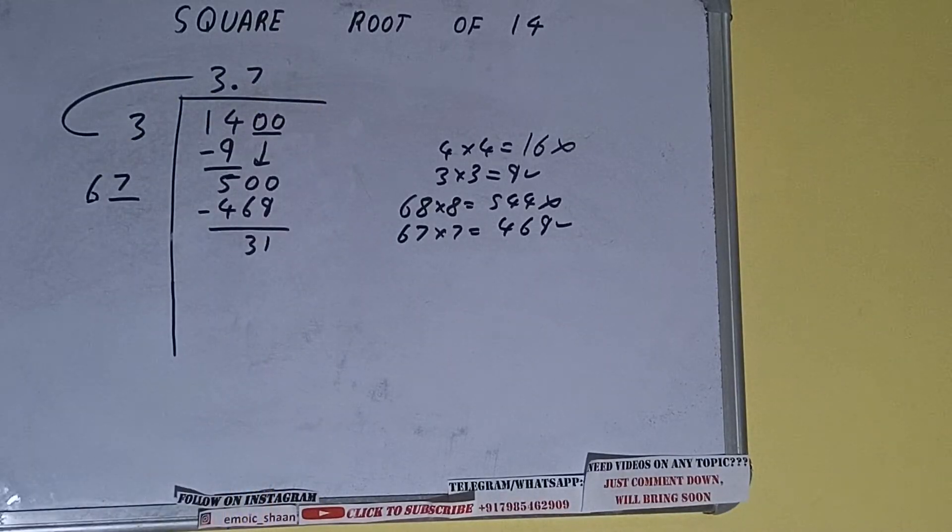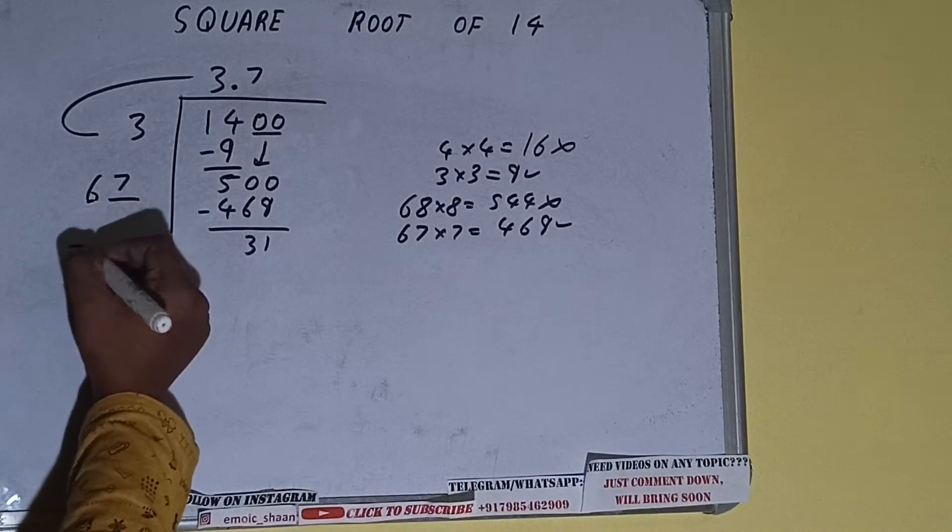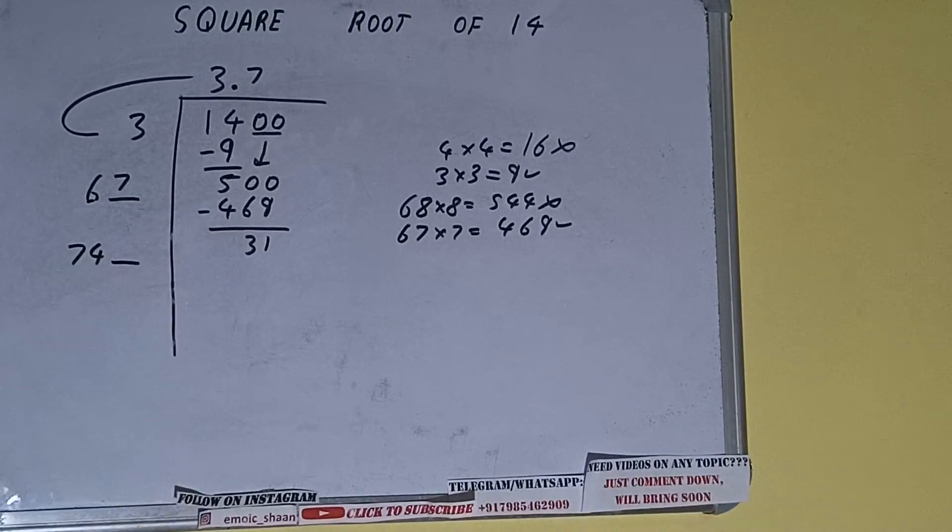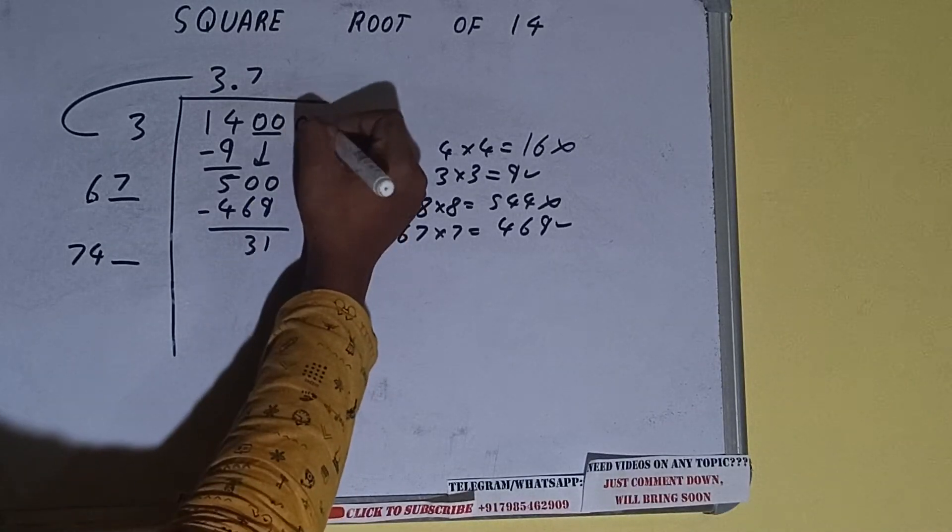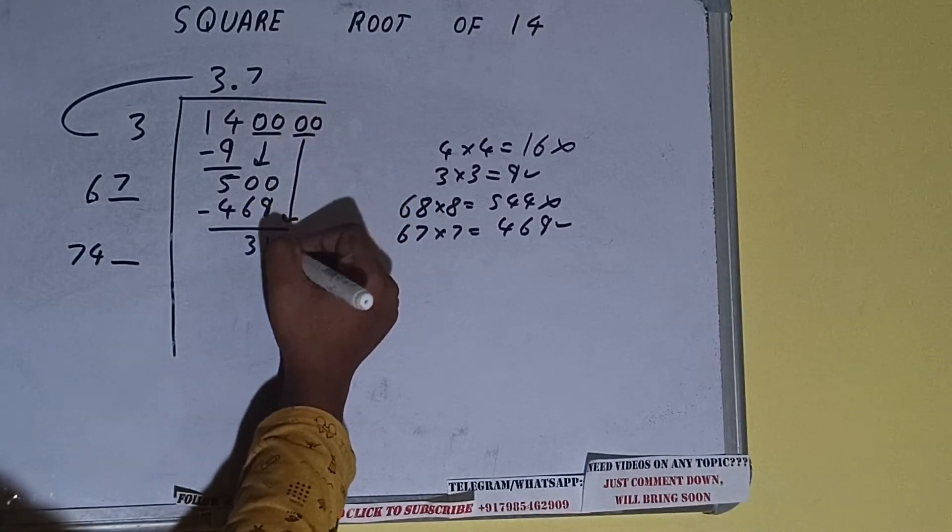Now 67 into 7 we did, so add both. So 67 plus 7 will be 74 and one digit extra. And this number we need to make it big, so bring the next pair of zeros down, and it will become 3100.